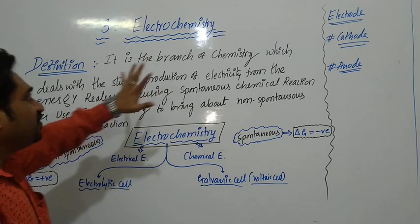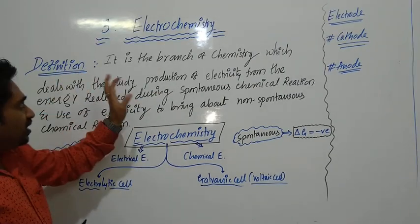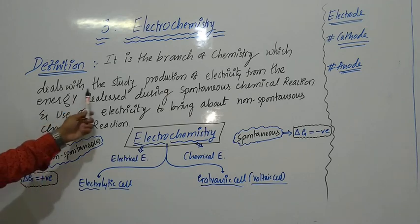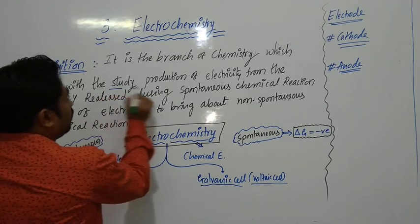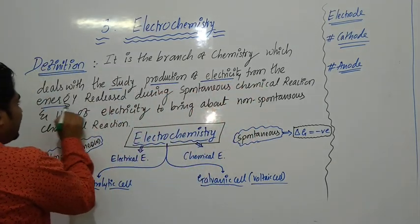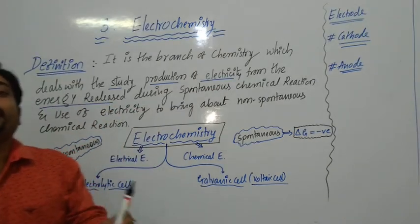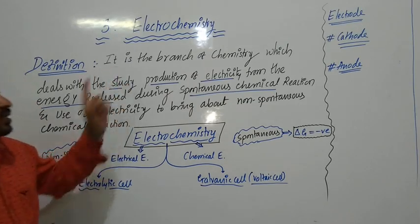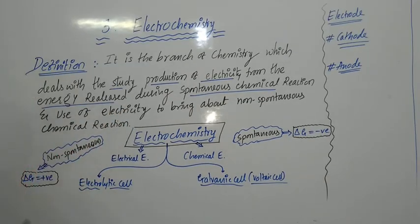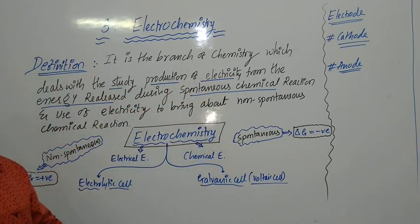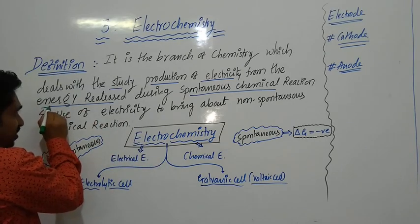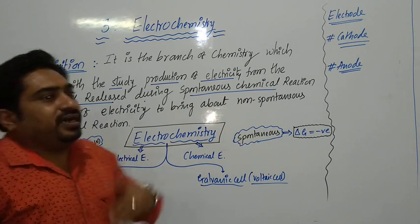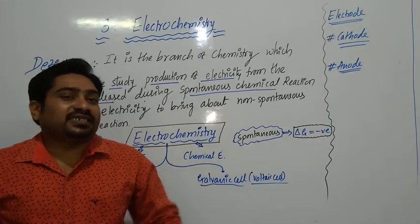Let us define electrochemistry. Electrochemistry is a branch of chemistry which deals with the study of production of electricity from the energy released during spontaneous chemical reactions. Electrochemistry is the branch of chemistry which deals with the study of production of electricity — that is, the preparation of electricity — from the energy released during spontaneous chemical reactions.